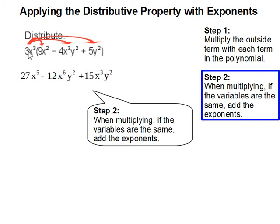Finally, 3 times 5 is 15. x³ - since there's no x in this term, it just comes over. And then y² comes down. This completes our problem.